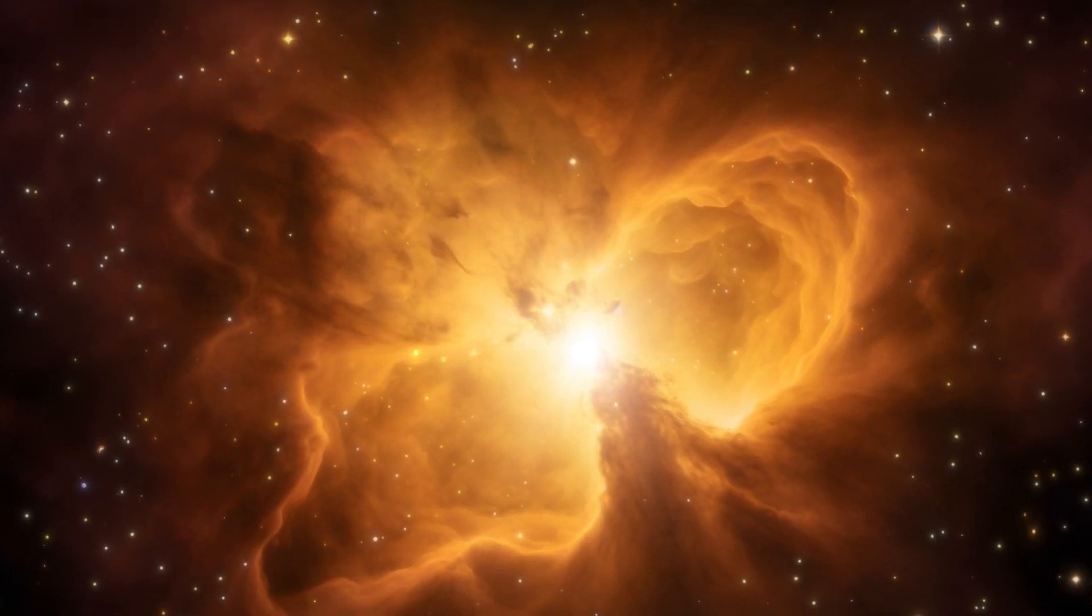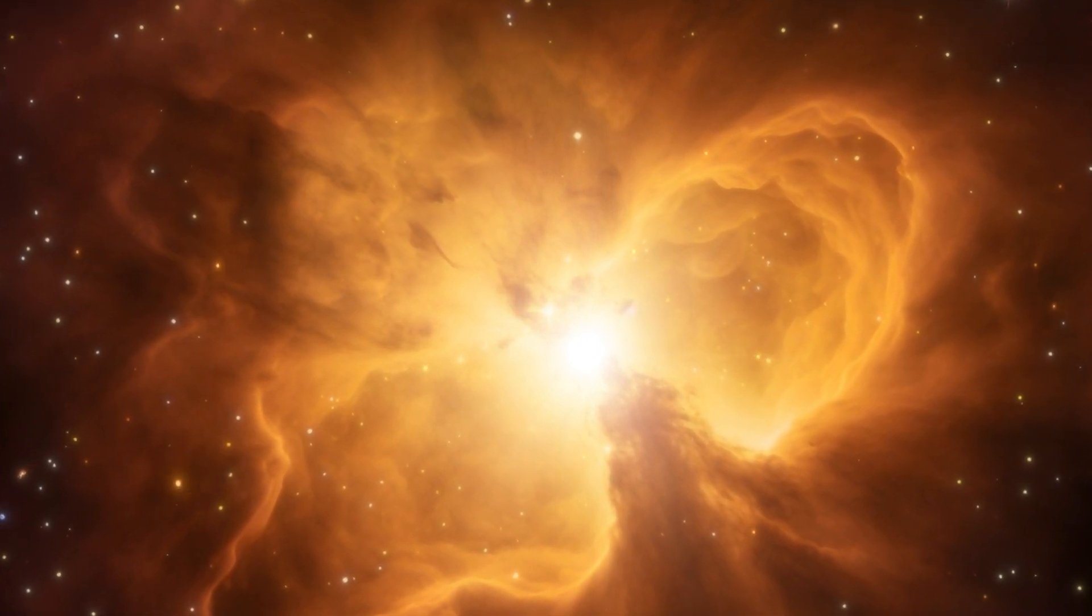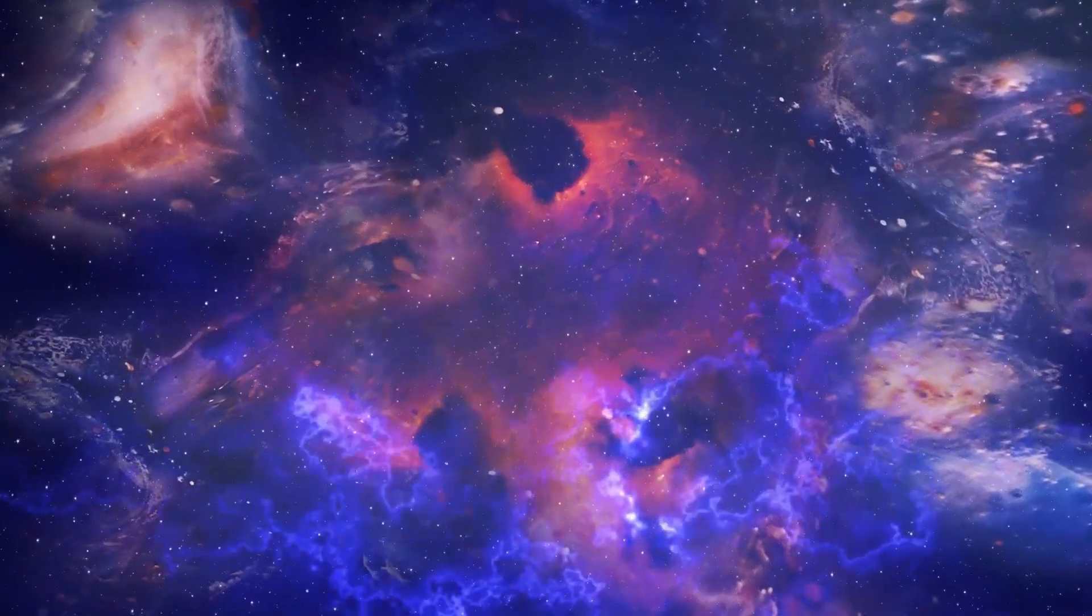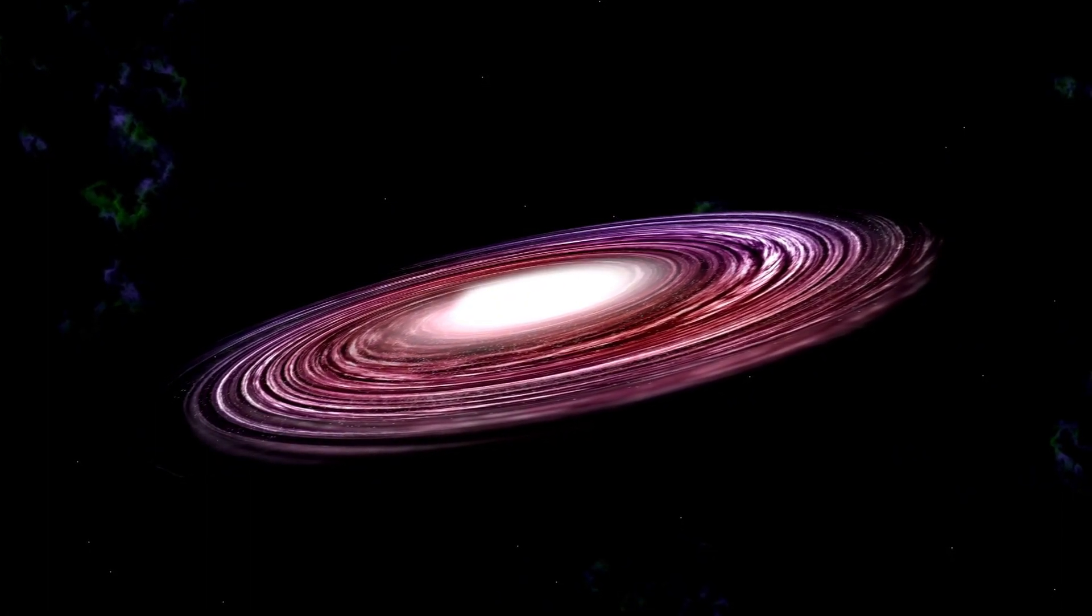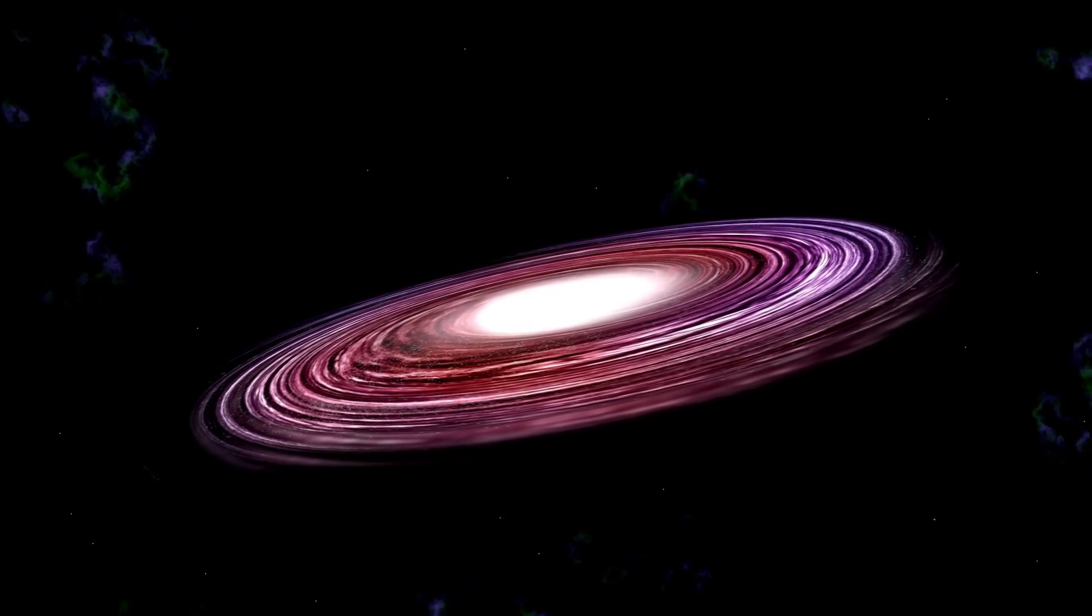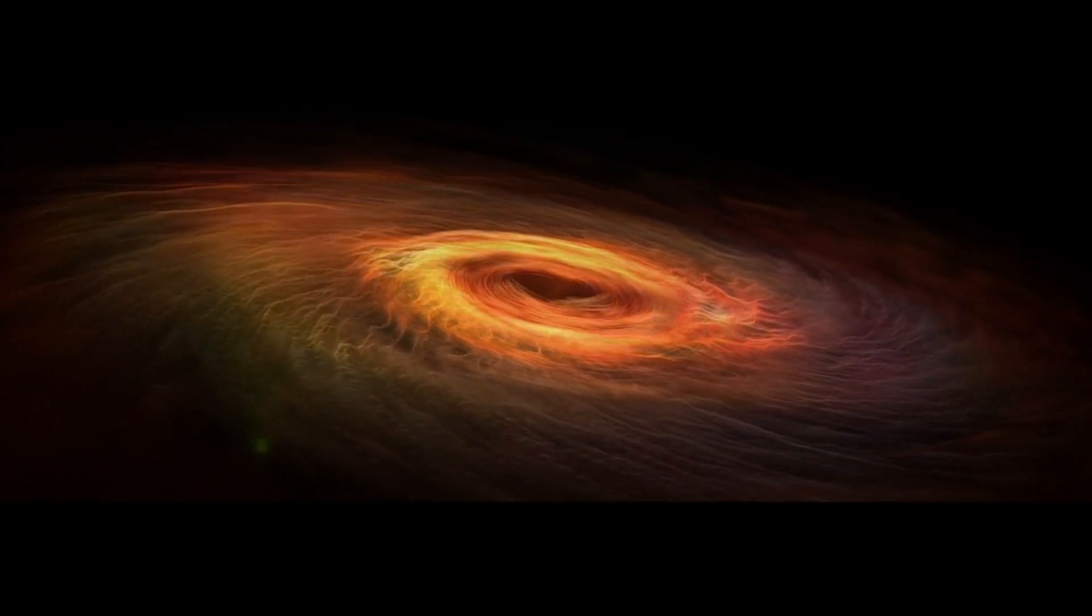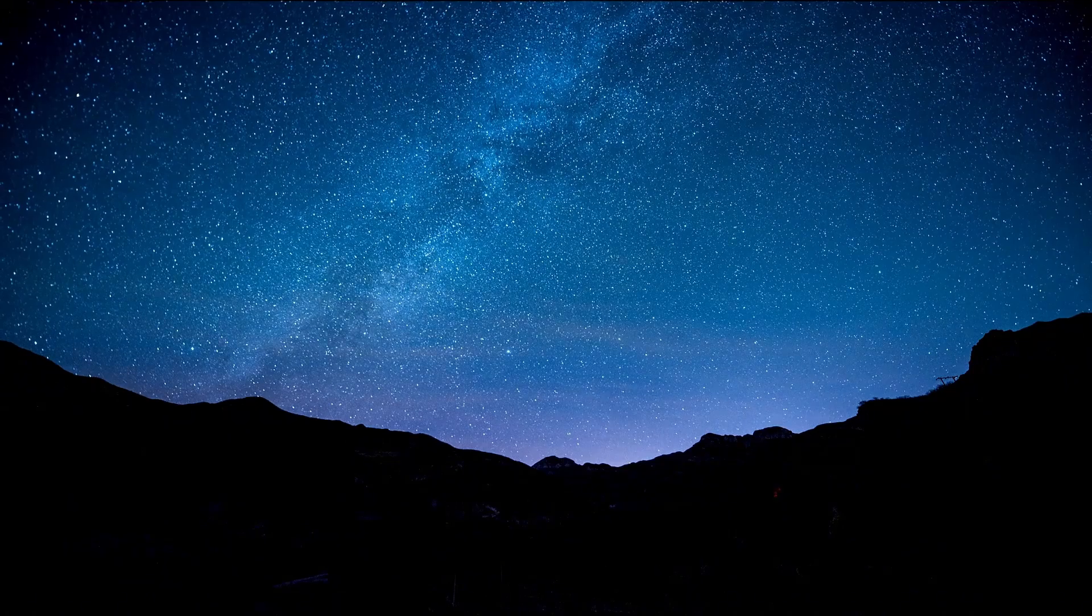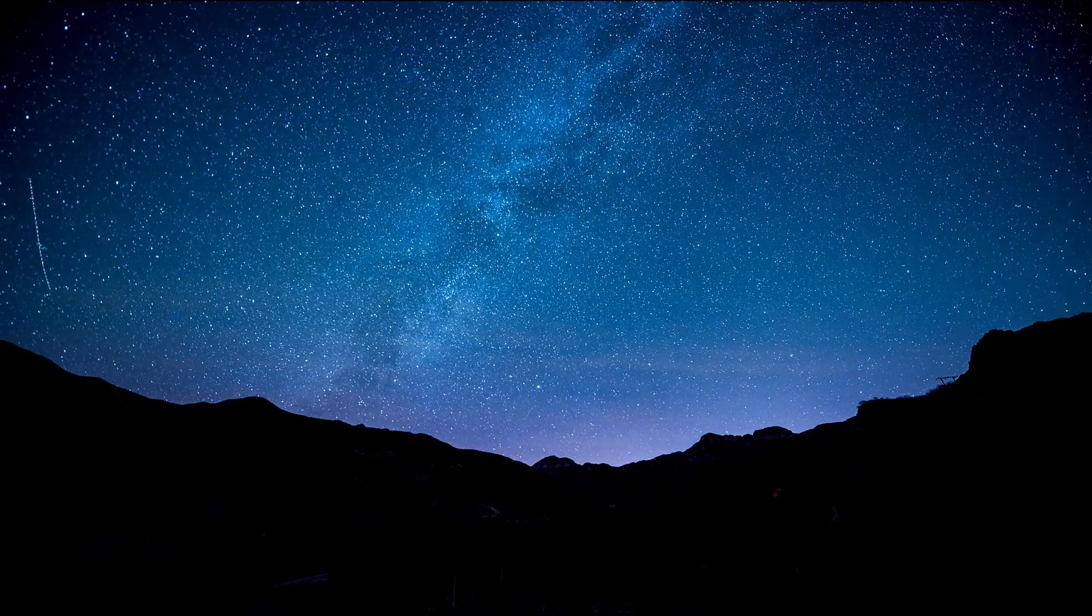Additionally, Betelgeuse's eventual explosion will leave behind a legacy in the form of a remnant, which could be a neutron star or even a black hole. The exact outcome depends on the mass of the star and how much material is expelled during the supernova event. The formation of a black hole from Betelgeuse would be a truly remarkable event, as it would create a region in space where gravity is so strong that not even light could escape, leaving behind a mysterious and powerful cosmic object. The study of such remnants offers a unique glimpse into some of the most extreme conditions in the universe. These remnants are not only fascinating for their mysterious properties, but also for the role they play in the continued evolution of the universe, influencing the formation of new stars and galaxies.